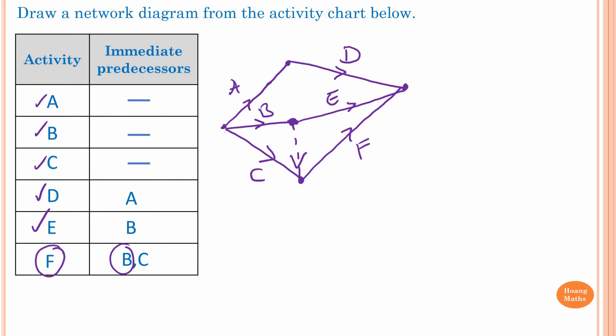You cannot draw a solid line here. If you draw a solid line, that represents an actual Activity, and there is no activity between B and F — it goes directly from B to F. That's why we have a Dummy Activity here.